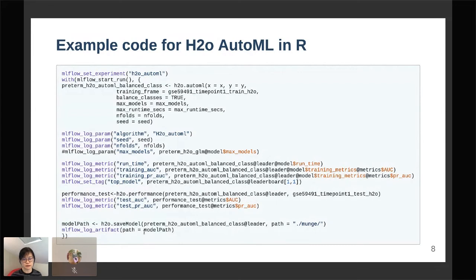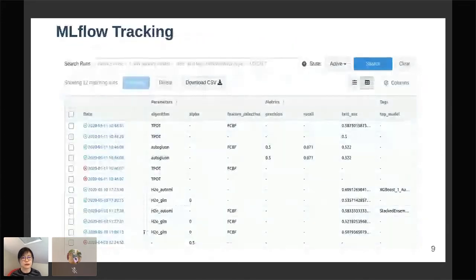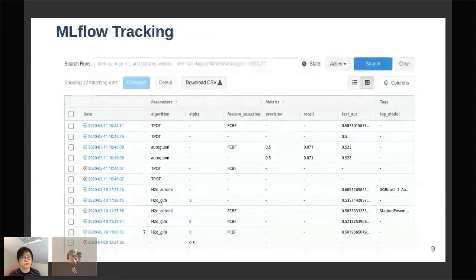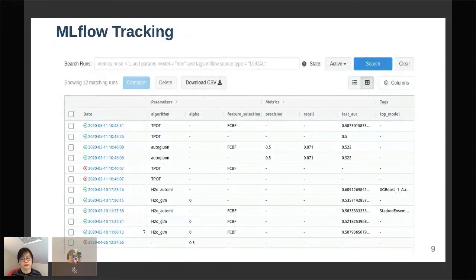I did the similar things with TPOT and AutoGluon. Then I can open up the MLflow UI to look at all the runs that I have performed. As you can see, some of my runs have failed.